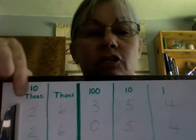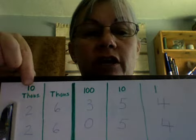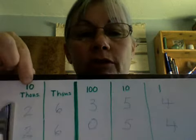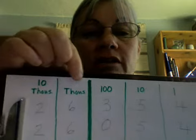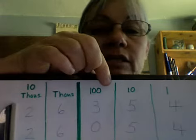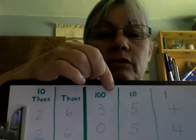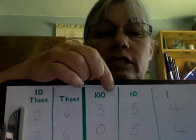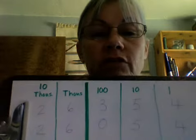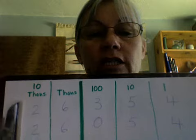We learned before that we start in the 10,000s column and compare the value there. We see that the 10,000s column is the same for each number. In the 1,000s column, again, the same for each number. But when we get to the 100s column, the numbers are not the same. We can see that there are 300s in the top number, but no 100s in the bottom number. Therefore, we know that 26,354 is the greater number.